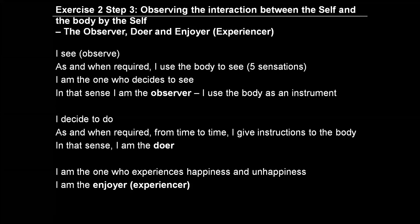It is the self which is seeing, which is observing. As and when required, I use the body to see; I use my five senses to see something outside. But it is basically the self who is seeing. So I am the one who decides to see — in that sense, I am the observer, I use the body as an instrument. The second important observation is that it is me, the self, who is deciding to do something. As and when required, from time to time, I give instruction to the body — in that sense, I am the doer.